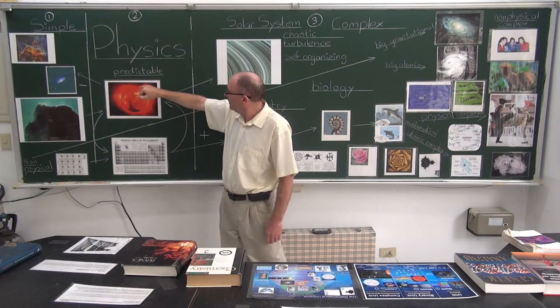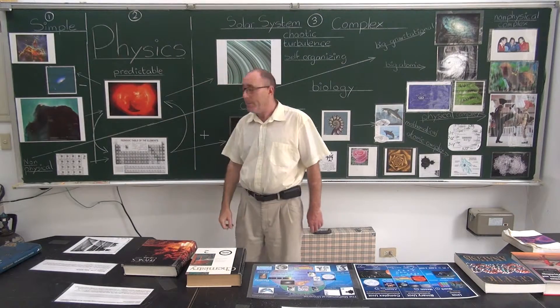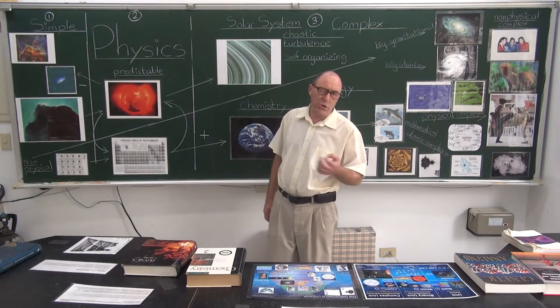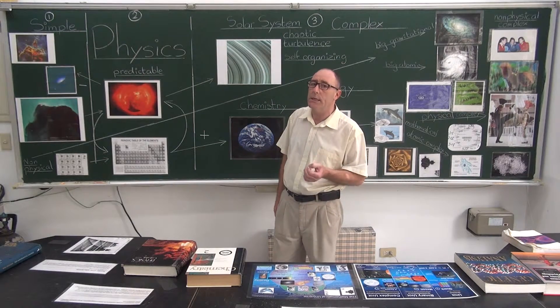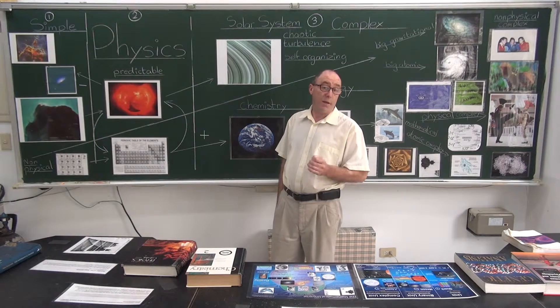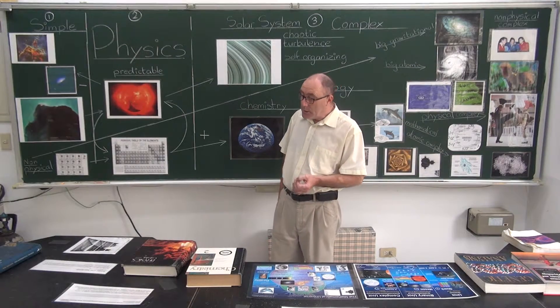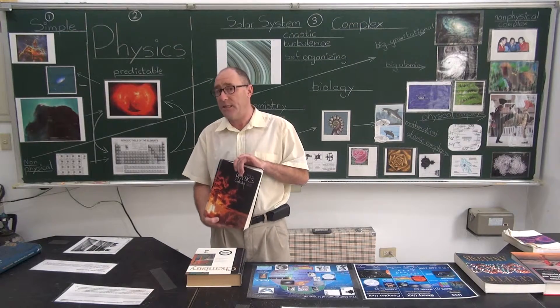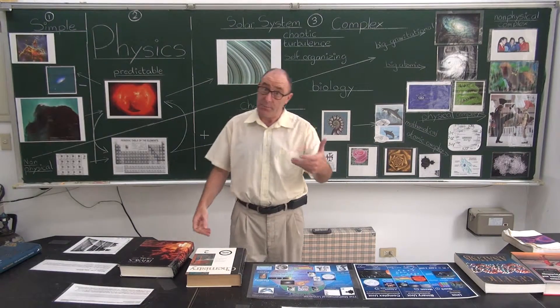Now, that's very simple. I've got physics. Physics, which is predictable. But in the star, I've also got turbulence. I've got convection currents. So, I also need another kind of mathematics. Turbulence isn't in the physics book, because physics is predictable. Turbulence is unpredictable.